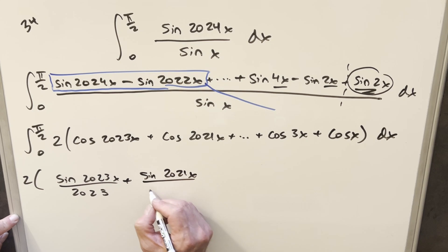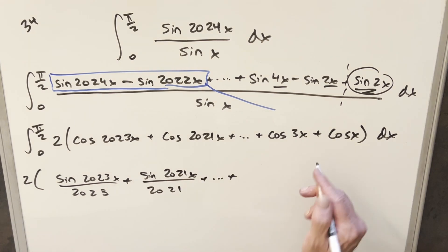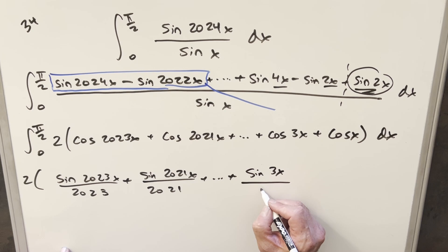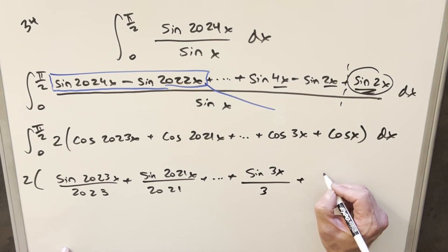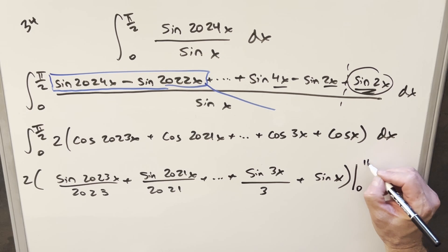Then let's just do these last two. So this is going to become sine 3x over 3. And then lastly, we're going to have just sine of x. And for all this, we're just evaluating from 0 to π/2.